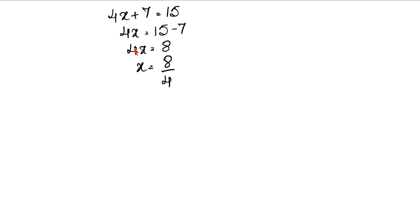As you will have seen in my past exercises, I have told you that when there is no sign between two terms, it means multiplication. So when there is a multiplier on the left side, it is divided on the right side. We will divide 8 by 4. So the value of x is 2.